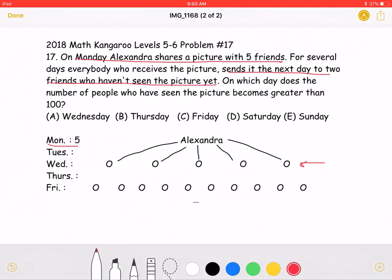That means that each of these five people sent it to two more people. Meaning that on Tuesday, ten new people have seen the picture.